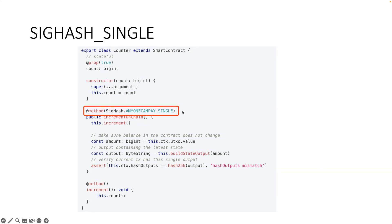Here's the code example. For a public function you have a decorated method that can take input. The default is SIGHASH_ALL, but this example uses a combination of SIGHASH_SINGLE and ANYONE_CAN_PAY. Can anyone guess why we use this sighash flag combination in the counter example — specifically why SINGLE, and why ANYONE_CAN_PAY?